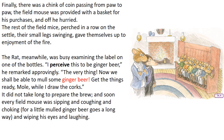The rest of the field mice perched in a row on the settle, their small legs swinging, and gave themselves up to the enjoyment of the fire. The Rat, meanwhile, was busy examining the label on one of the bottles. 'I perceive this to be ginger beer,' he remarked approvingly. 'The very thing. Now we shall be able to mull some ginger beer.' It did not take long to prepare the brew, and soon every field mouse was sipping and coughing and choking, for a little mulled ginger beer goes a long way.